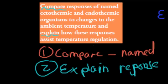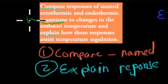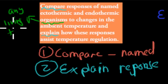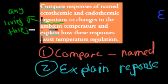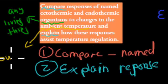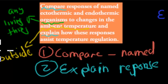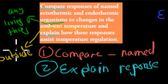Before we start, let's go over all the key terms in this dot point. An organism is just any living thing, so we need one ectothermic and one endothermic organism. We've chosen the red kangaroo and the blue-tongued lizard. We also have the term ambient temperature — this is the outside temperature. For example, if it's 25 degrees and sunny outside, the ambient temperature is 25°C, whereas our body temperature would be 37°C.